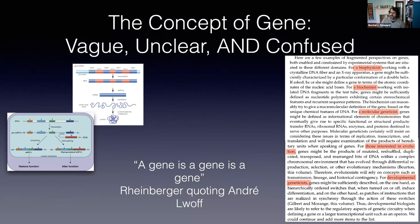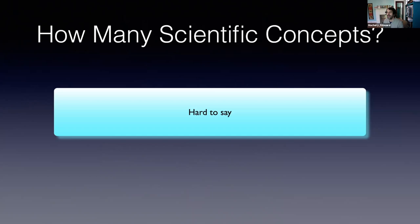There's a huge literature on the concept of gene — I've mentioned the Rheinberger book, but there's much more published over the last 20 years by people like Alan Love. At this point, it would be fair to ask: some scientific concepts are unclear, vague, and confused — but how many are? Despite their importance, maybe it's only a handful. My guess — and we can come back to this in Q&A — is that in fact many scientific concepts happen to be vague, unclear, and confused.